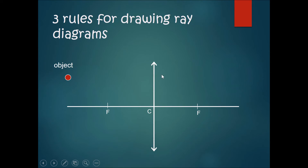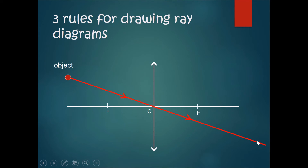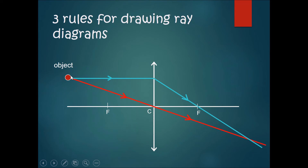Now how do we draw ray diagrams? Usually you'll be given an object, shown as an arrow pointing upwards. The first thing to do is apply rule one: draw a line from the tip of the object through the optical center and continue on. Then apply rule two: draw a line from the tip of the object parallel to the principal axis — when it hits the lens it bends and goes through the focal point.